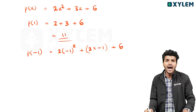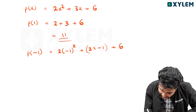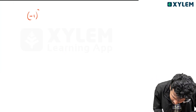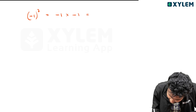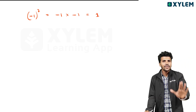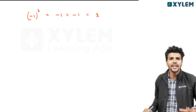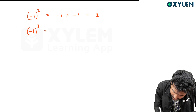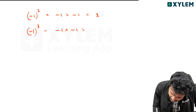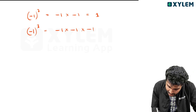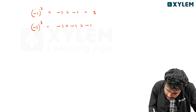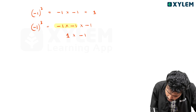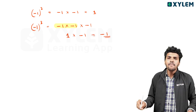Simple. Minus one squared — that is minus one into minus one — equals one. Minus one cubed — that is minus one into minus one into minus one — equals minus one. These are the key principles.